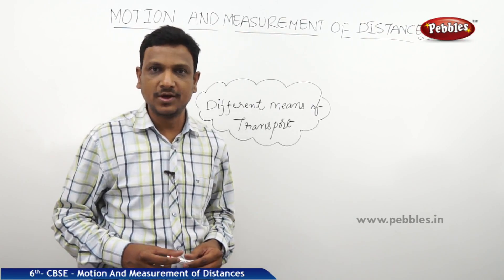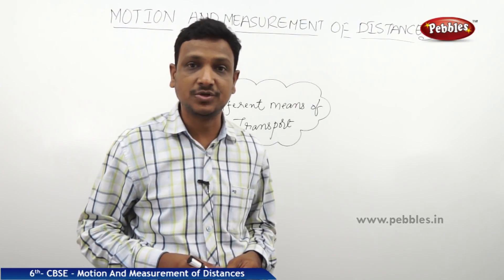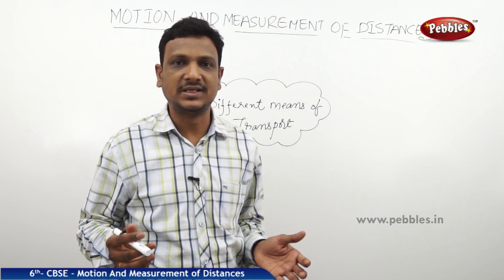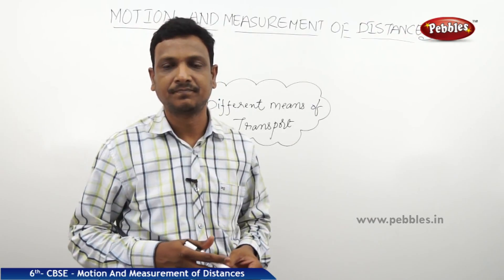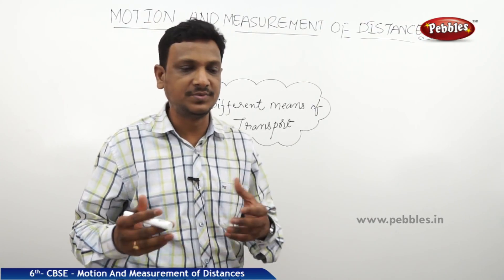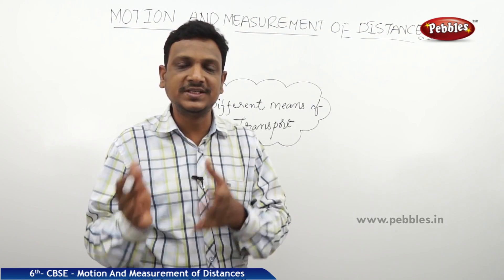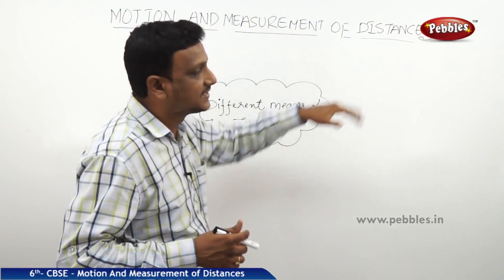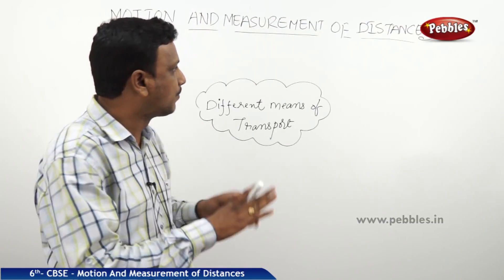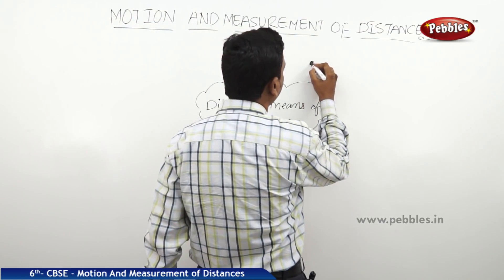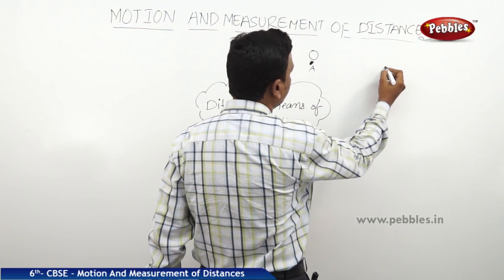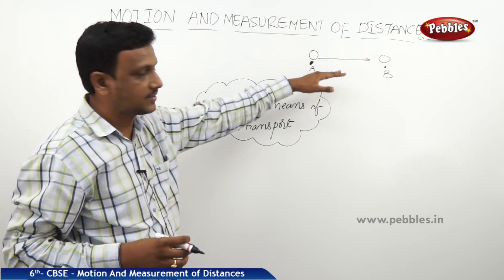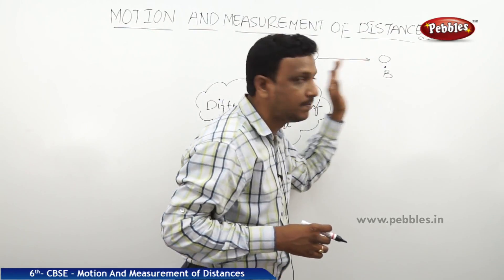Good morning children. Today our topic is motion and measurement of distances. What is motion? If an object changes its position from one point to another point, you can say that the object is in motion. So an object changing its position and moving — that is called motion. For example, this object moved from point A to point B, so we call that motion.